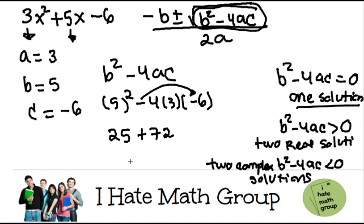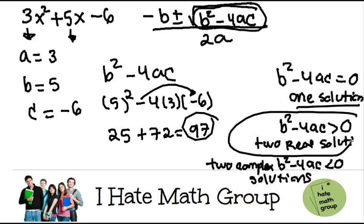Since the discriminant was greater than zero, that means we have two real solutions. And that's it.